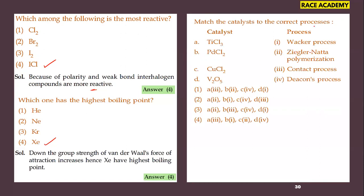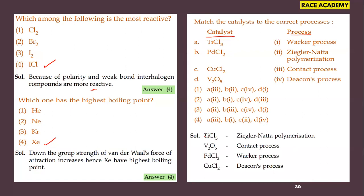Match the catalyst to the correct process. Catalysts are given on one side and process names on the other. Vanadium pentoxide (V₂O₅) is used in the Contact process; copper chloride in Deacon's process; palladium chloride in the Wacker process; and titanium chloride is the Ziegler-Natta catalyst for polymerization. Arranging these — vanadium pentoxide maps to Contact process (D3) — the second option is correct.